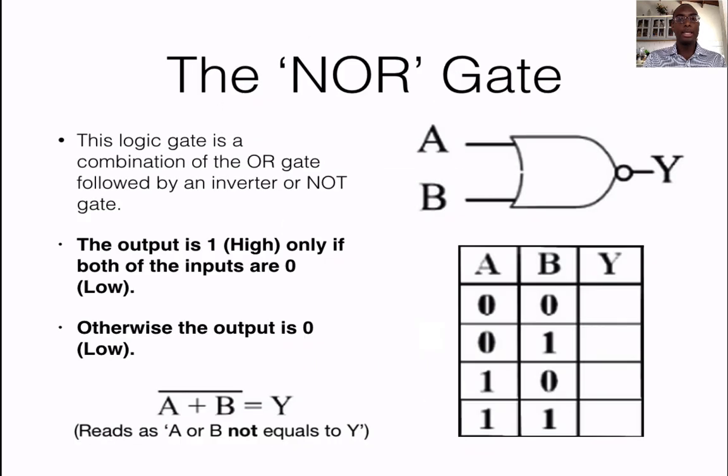Moving on to the next gate, you have a NOR gate. This logic gate is a combination of an OR gate and a NOT gate and therefore it is the opposite of an OR gate. Your output is high only if both of your inputs are low or 0.